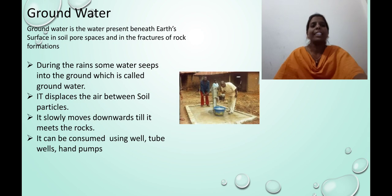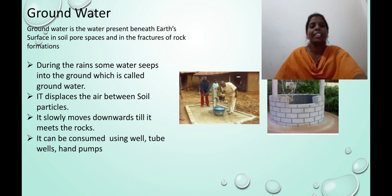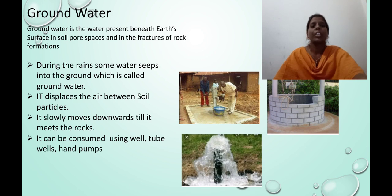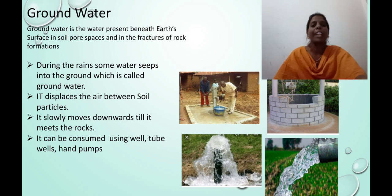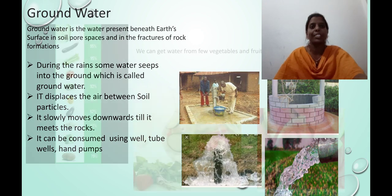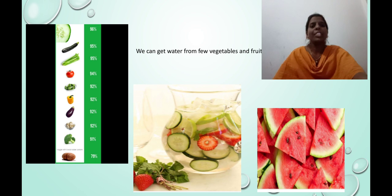Okay, children, can we get underground water? Yes, we can. You know, we dig wells. The tree roots go underground to get underground water. Hand pumps are also used to get underground water. Water comes not only from sources like ponds, rivers, and lakes. We can also get water from some vegetables and fruits like watermelon and cucumber.